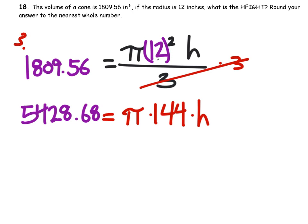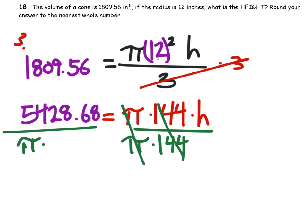But we need to just solve for the height. And to do that, we would want to divide both sides by π times 144, because then these will cancel out. But if we do it to one side, we must do it to the other side as well.